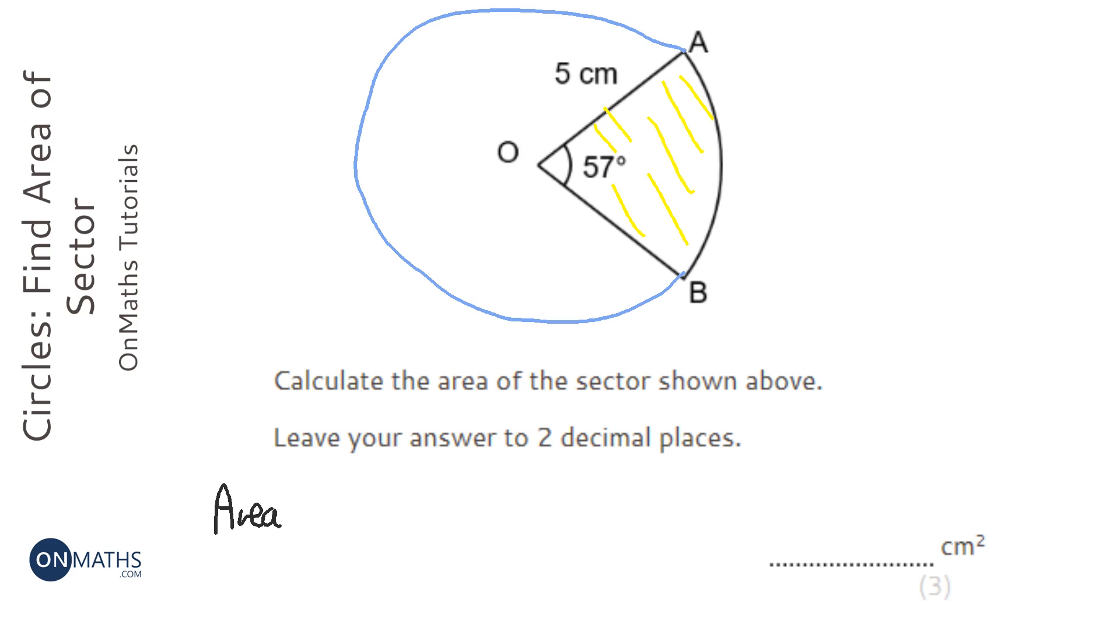I'm going to work out the area of the circle, which is pi times r squared, and then what we're going to do is times it by the fraction of the circle we have.